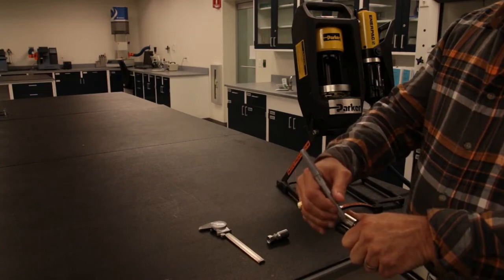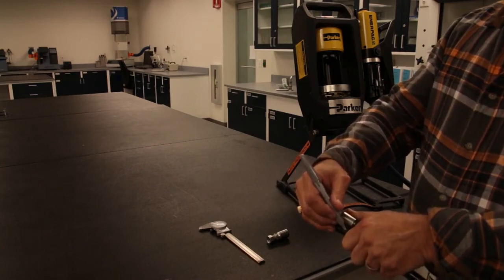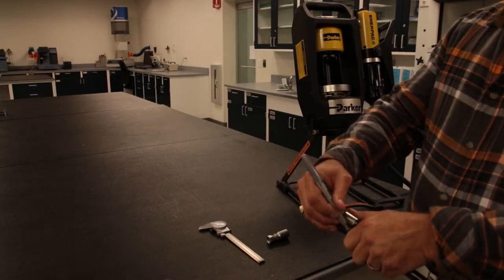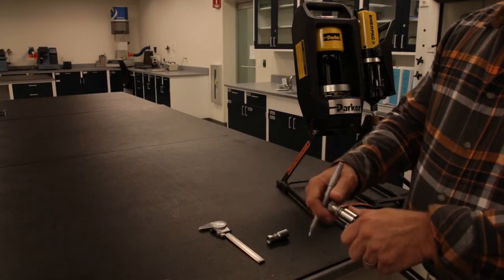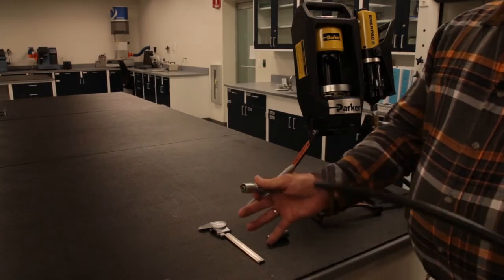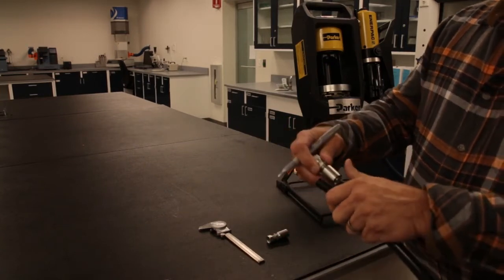This step can be completed by either purchasing a set of depth insertion blocks or, in our demonstration, by placing the fitting next to the end of the hose and applying a mark where the hose would be bottomed out on the fitting.